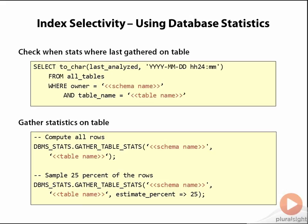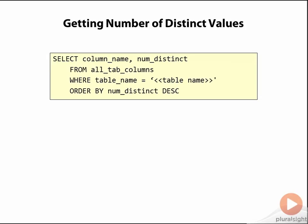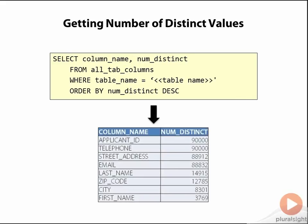The second example shows where you just want to sample some of the rows of the table, in this case 25%. The reason you might want to sample is that the table might be very large, so looking at every row to compute stats will take a very long time and use a lot of system resources. You may also be confident that your data distribution doesn't vary that much, so sampling a logical percentage of rows will give you the results that you need. Once you are satisfied that Oracle has up to date statistics for your table, you can simply run this query against the all_tab_columns view. This will show you the number of distinct values for each column, and is useful for being able to quickly scan through the columns in your table to understand what columns tend to be more unique.